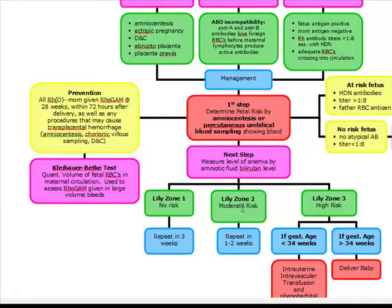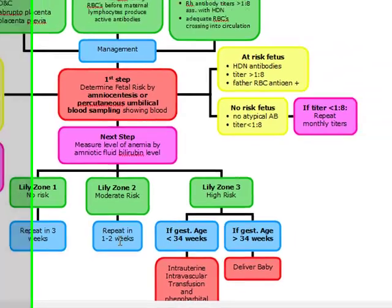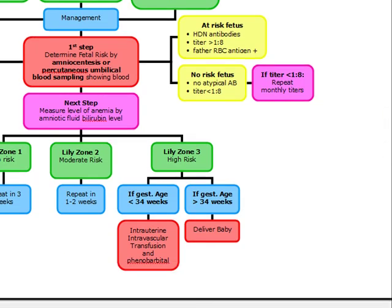If the patient is in Liley zone two, this is moderate risk, and we repeat the test in one to two weeks. If they are in Liley zone three, these patients are high risk and we look at gestational age. If gestational age is less than 34 weeks, we perform intrauterine intravascular transfusion and give phenobarbital. If gestational age is over 34 weeks, the lungs are mature, so we go ahead and deliver the baby.